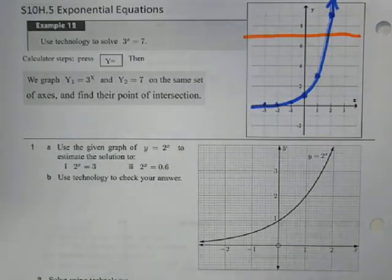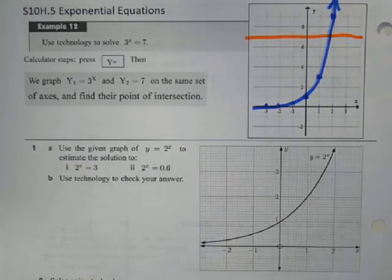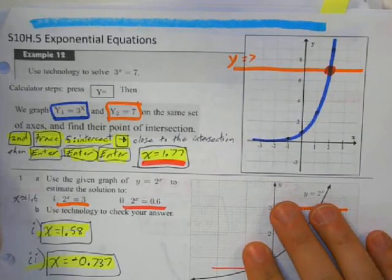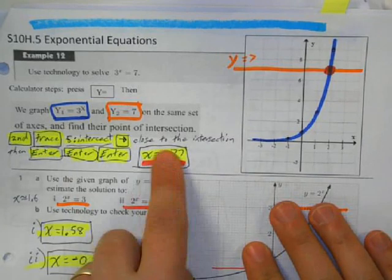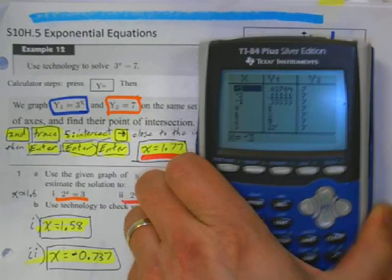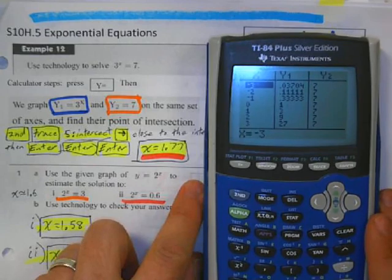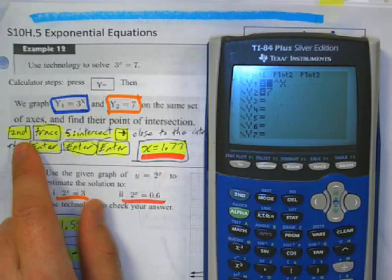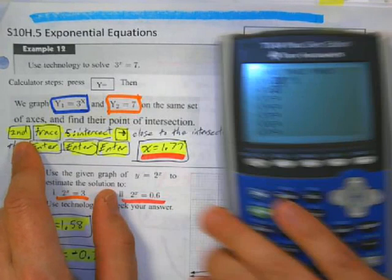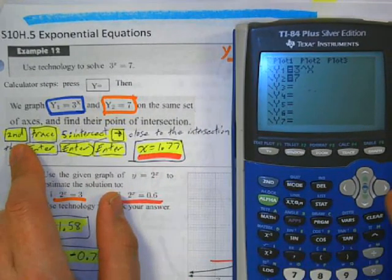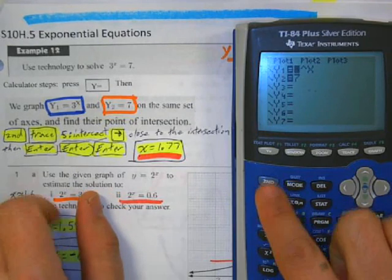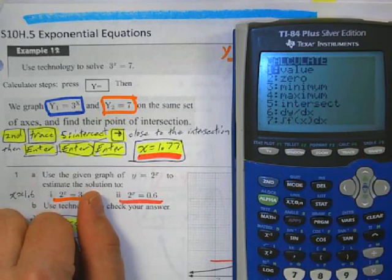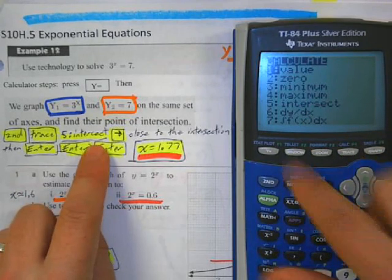The first thing you're going to do is, I want you to hit pause and write down these calculator steps into your notes. Hit pause. So now that you've copied this into your notes, you hit second and trace. So second and trace gives me these calculation choices. We want to find the intersection. So we go to 5, we're going to hit intersection.